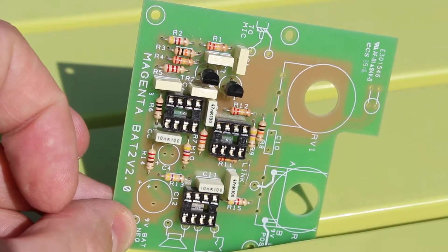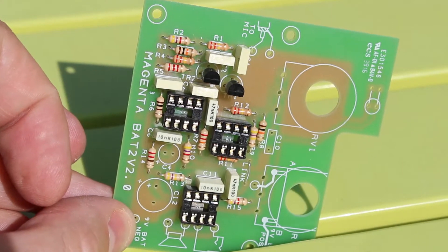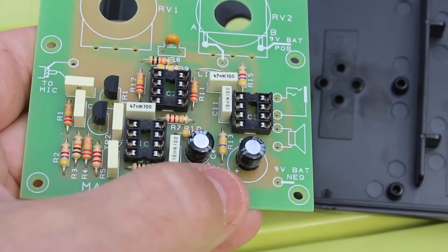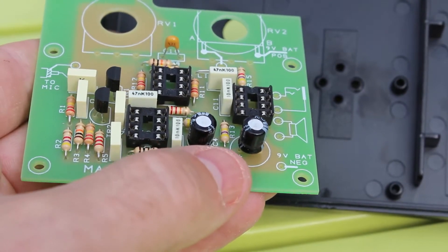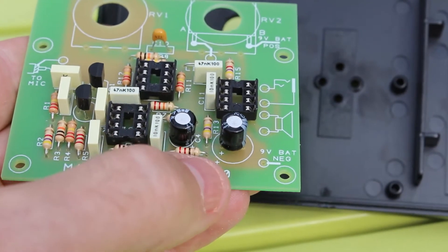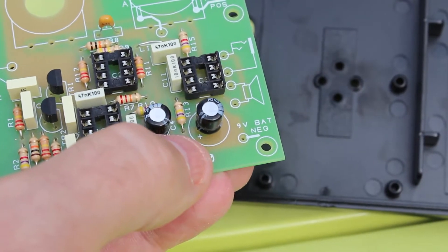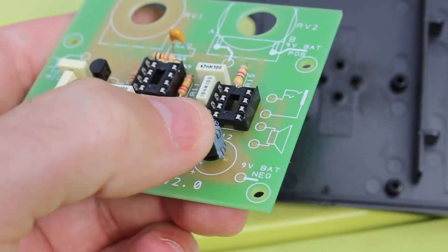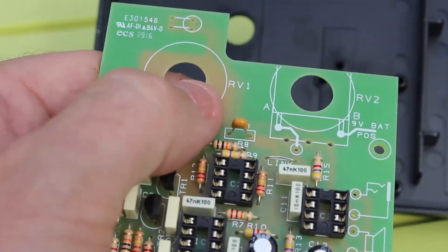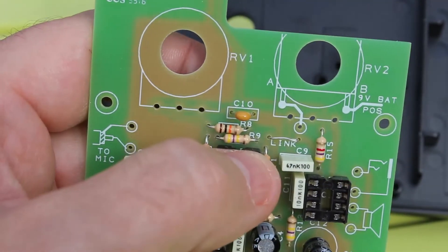Now it's time for the electrolytics. Obviously they are polarized so it's important you get them the right way round. I've finished all the capacitors now. The two electrolytics have gone in here. Make sure you get them the right way around. You can see the plus marking on the PCB and the minus band on the capacitor body. The other one I forgot to do is this one up here which is C10.